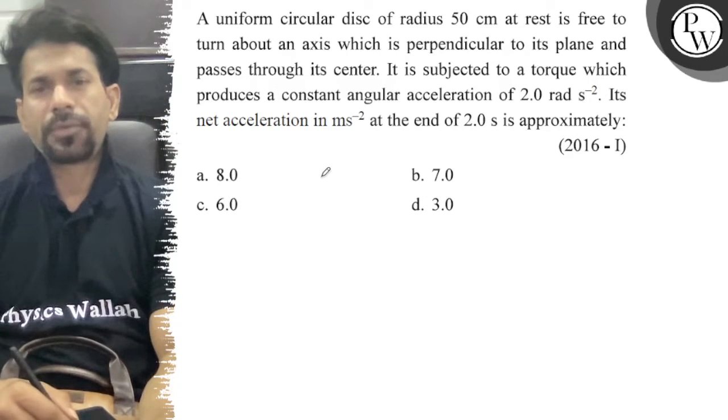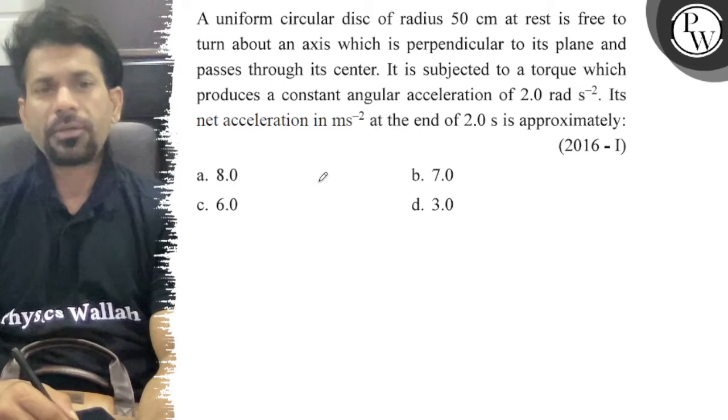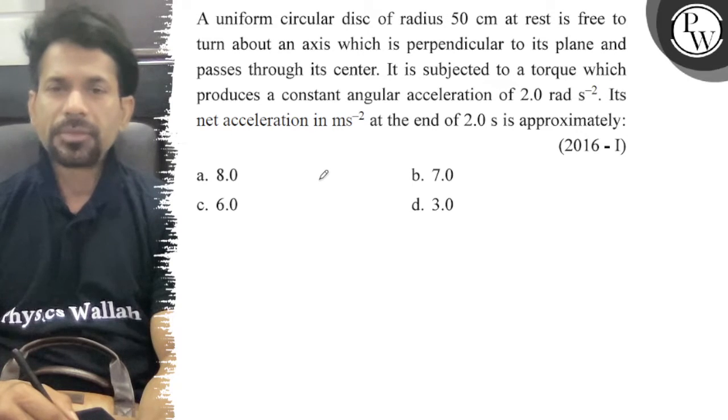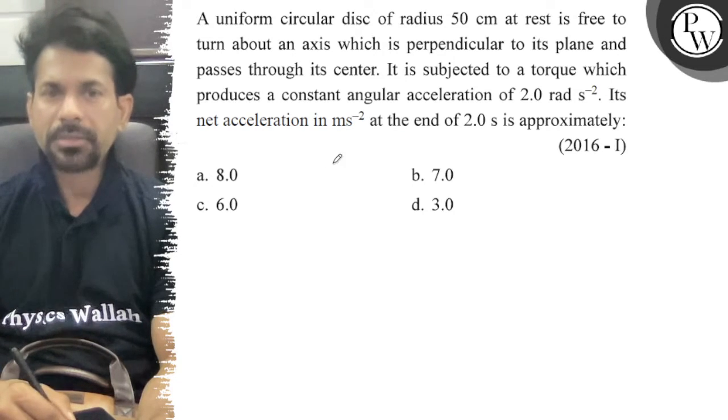A uniform circular disc of radius 50 centimeters at rest is free to turn about an axis which is perpendicular to its plane and passes through the center. It is subjected to a torque which produces a constant angular acceleration of 2 rad/s². We need to find the net acceleration in m/s².